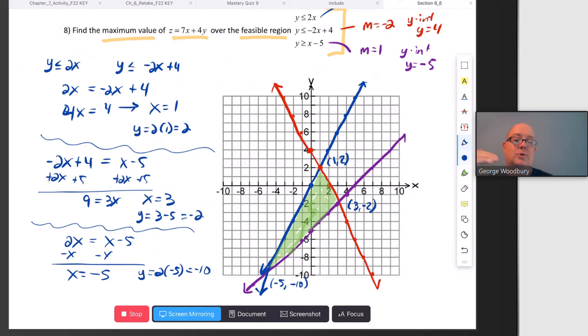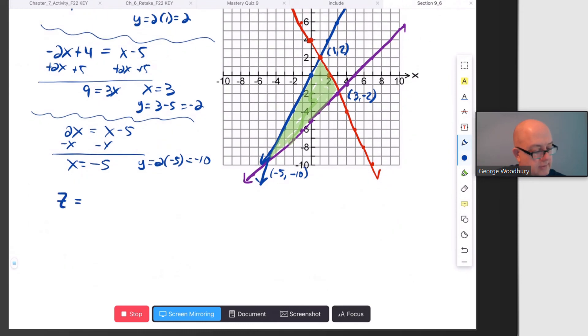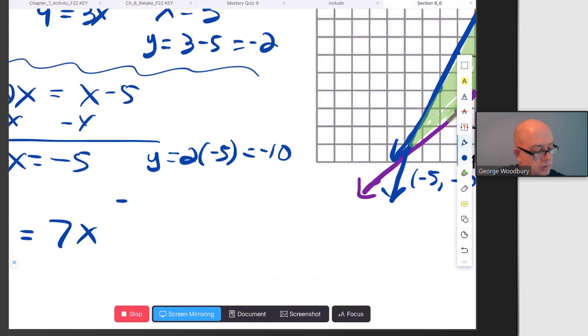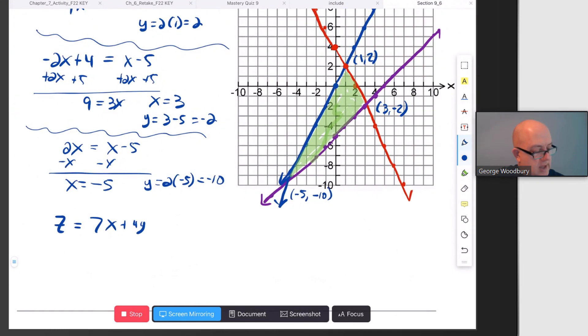The maximum value has to occur at one of those three. All we have to do is substitute those three ordered pairs and see which one gives us the biggest value of z. I'm going to rewrite the equation: z = 7x + 4y. We're going to start with that first point, (1, 2). Here, z = 7(1) + 4(2) = 7 + 8 = 15.